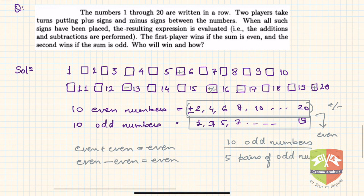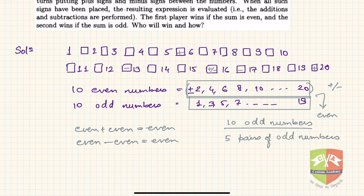Now if there are pairs of odd numbers, whether two odd numbers are added or subtracted, the result is always even. So odd plus odd is equal to even, and odd minus odd is also even. And there are 5 such pairs, so there will be 5 even numbers.